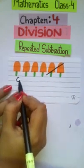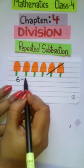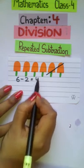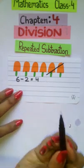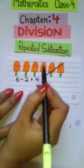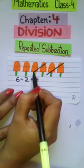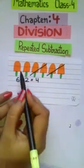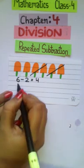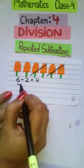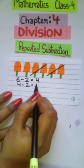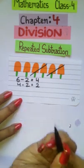6 minus 2 equal to 4 ice creams as you all can see. Next, if I subtract 2 more ice creams from the 4, then I am left with 2 ice creams. So, here I subtract from 4, 2 more ice creams and I am left with 2 ice creams.